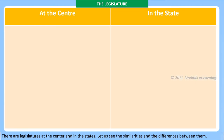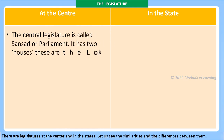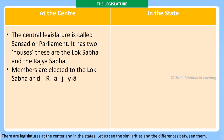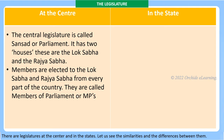Let us see the similarities and differences between them. At the center, the central legislature is called Sansad or Parliament. It has two houses: the Lok Sabha and the Rajya Sabha. Members are elected to the Lok Sabha and Rajya Sabha from every part of the country — they are called Members of Parliament, or MPs.